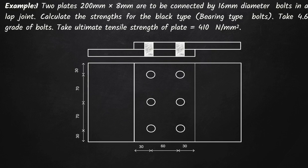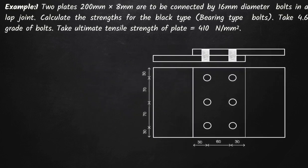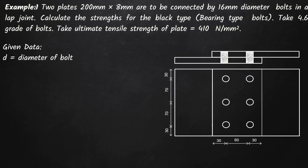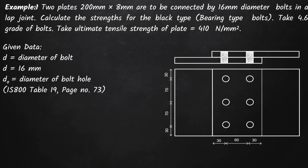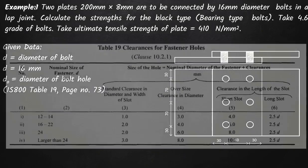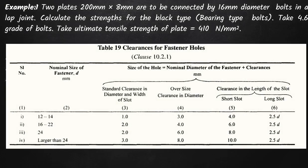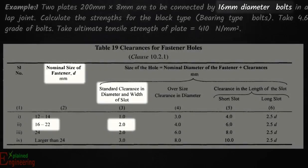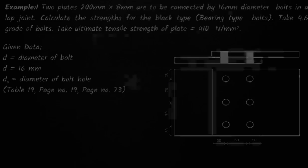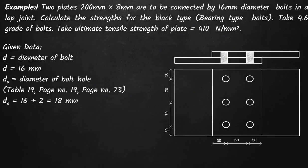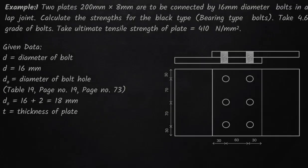Writing down the given details: small d, the diameter of the bolt, equals 16mm. d₀, the diameter of the bolt hole, is as per Table 19 of IS800. For a nominal bolt size of 16 to 22mm, the additional clearance to be provided equals 2mm, so d₀ equals 16 plus 2, that is 18mm. Thickness of the plate t equals 8mm.